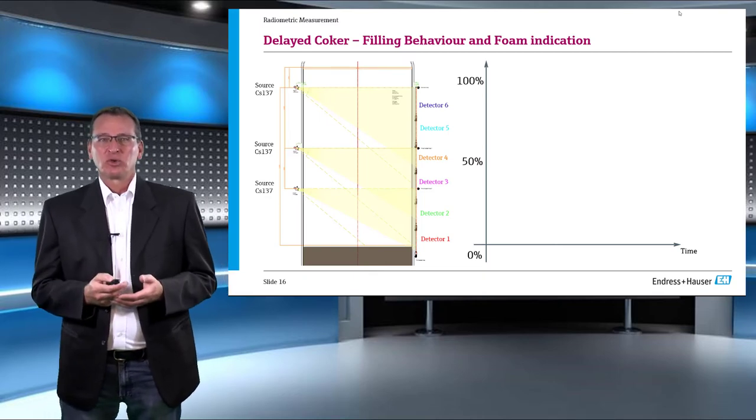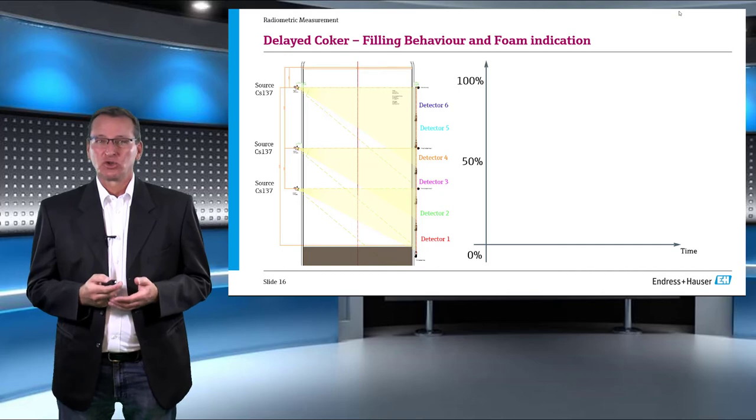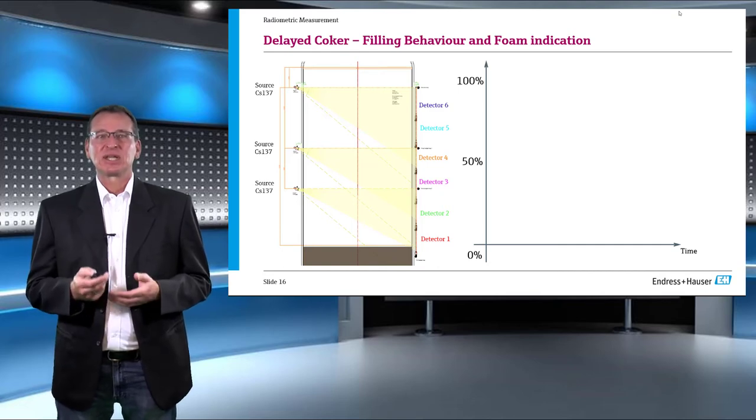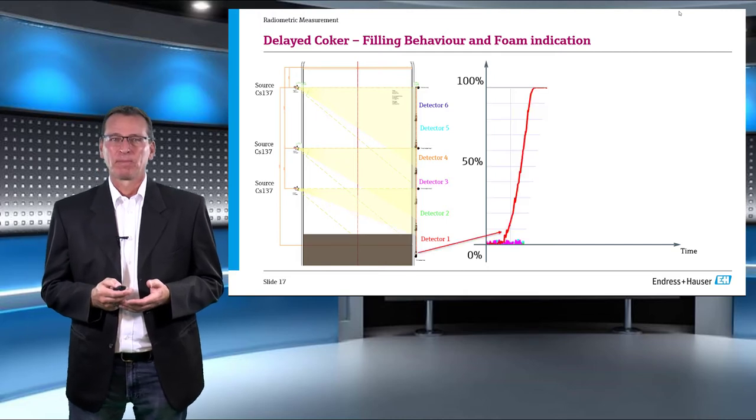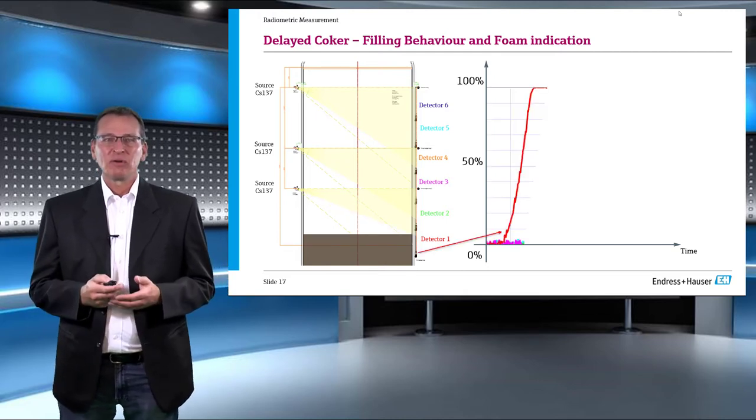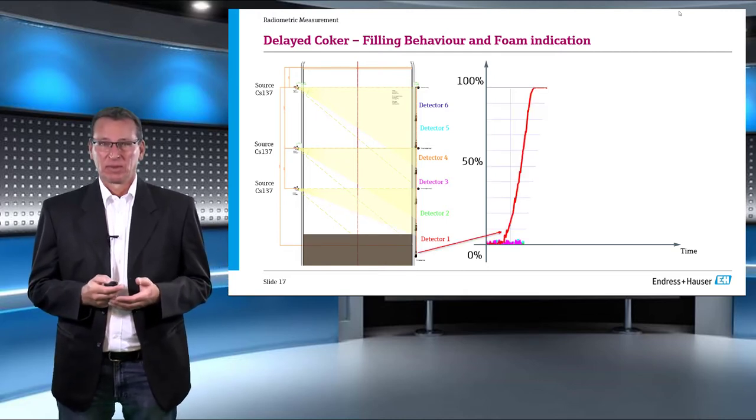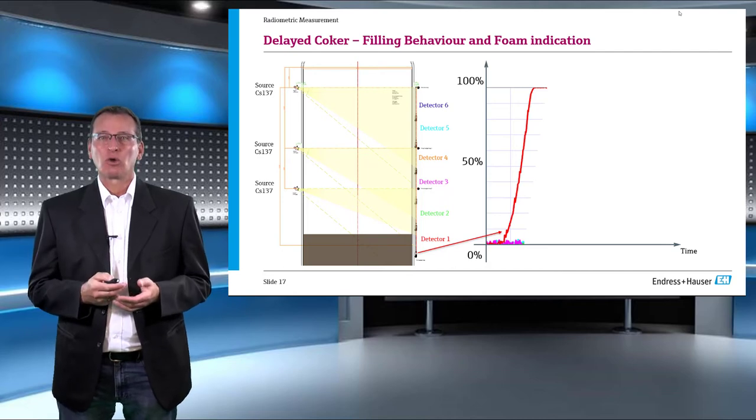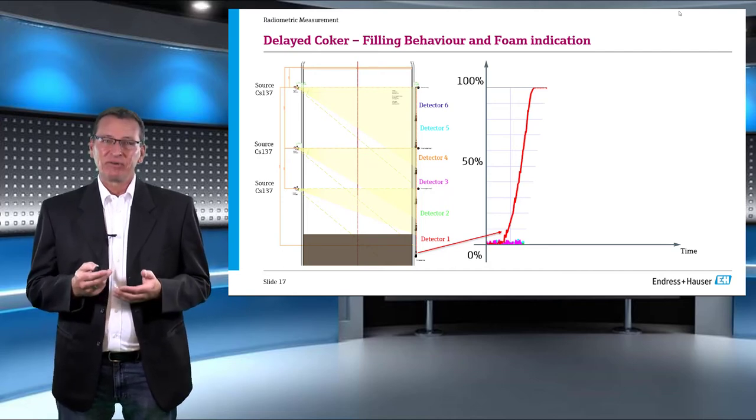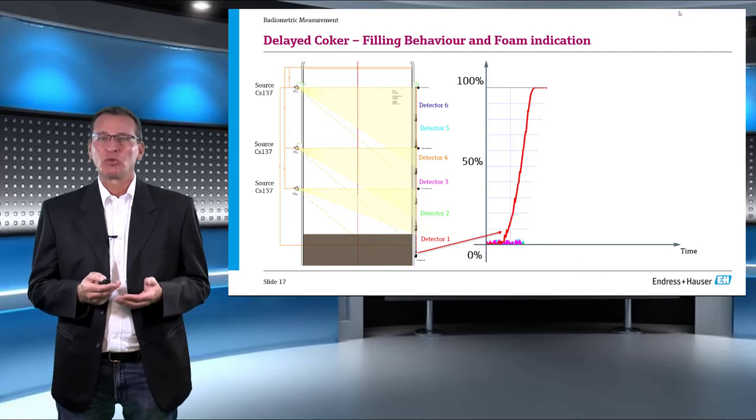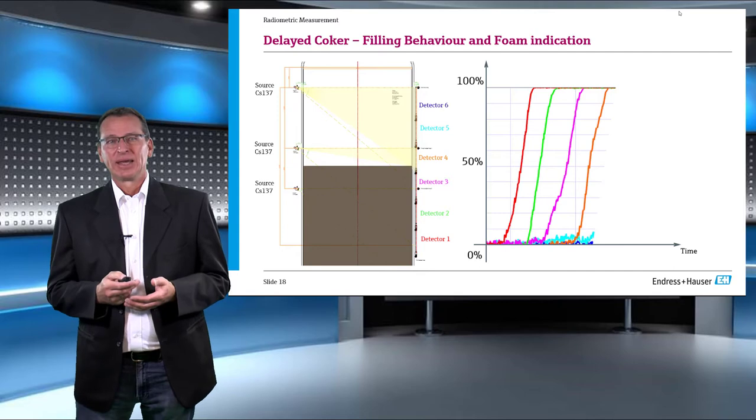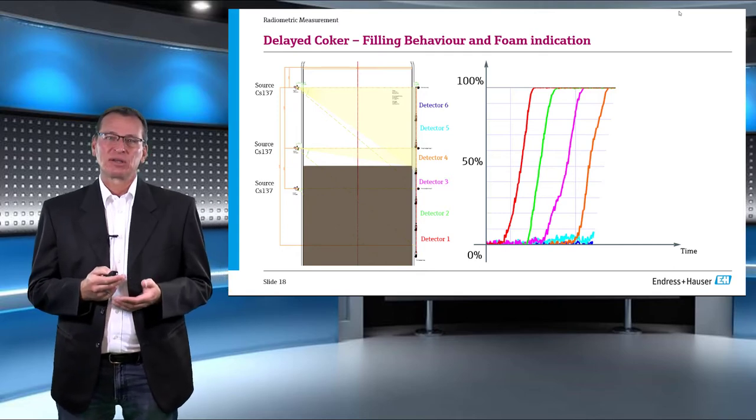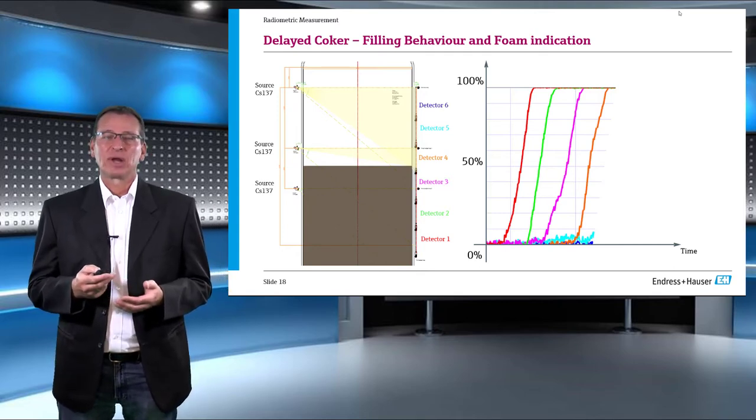Here is a DCS screenshot from one of our installations in Germany. We have 6 detectors and 3 sources installed in this drum. Now the level of coke starts rising. The red graph shows the output from detector 1. As the level increases, we can see the output rising from 0 to 100%. Similar trend follows with detector 2, 3, and 4, and so on.